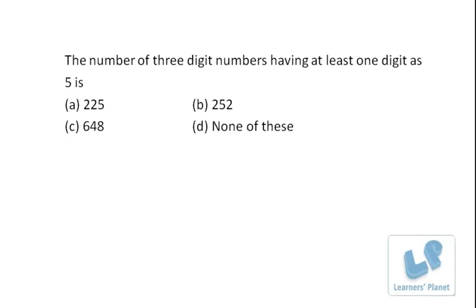Let's do this question. The number of three-digit numbers having at least one digit as five. That means one digit can be five, two digits can be five, and all three digits can be five. So I take a reverse approach — I take all three-digit numbers and from that I deduct the numbers in which there is no five at all. The calculation of one five, two fives, and all three fives would be a bit lengthier.